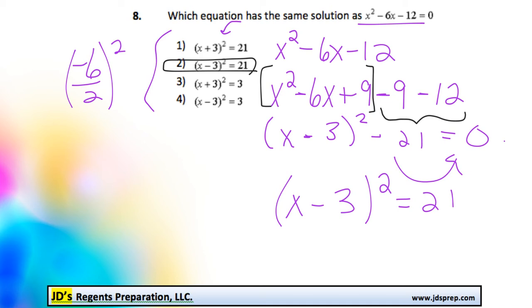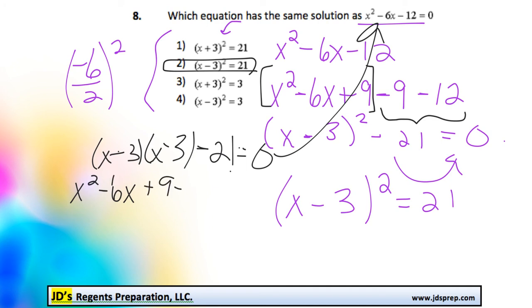We could take x minus 3 squared and have that minus 21 there and see if we end up going back to the exact same thing. In fact, I'll just show you really quickly. You'd get x squared minus 6x plus 9 minus 21. Oops, not 12, minus 21. And then this is the same thing as x squared minus 6x minus 12.